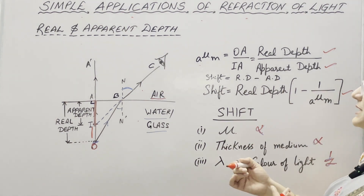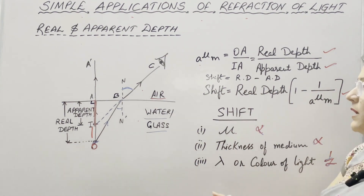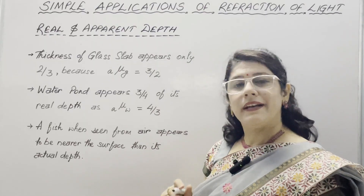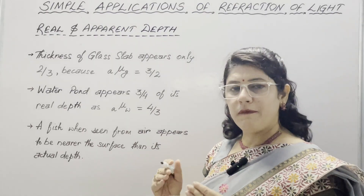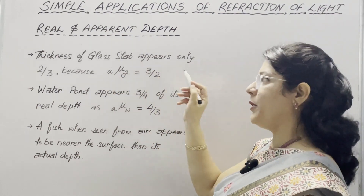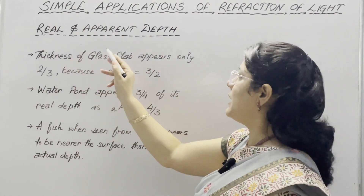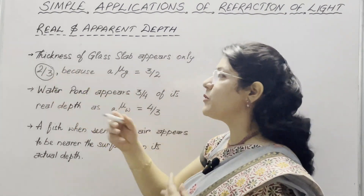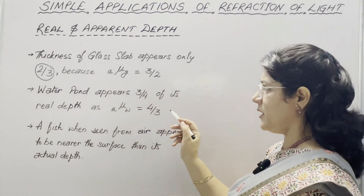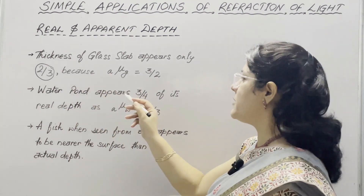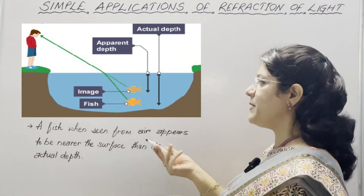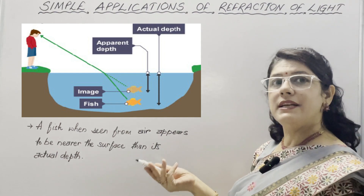Shift is the difference between real depth and apparent depth — the object is actually at one point but appears at another. Refractive index of glass with respect to air is 3/2, therefore the thickness of glass appears only two-thirds of its original thickness. Refractive index of water with respect to air is 4/3, therefore a water pond appears to be three-fourths of its real depth. A fish when seen from air appears to be nearer the surface than its actual depth.